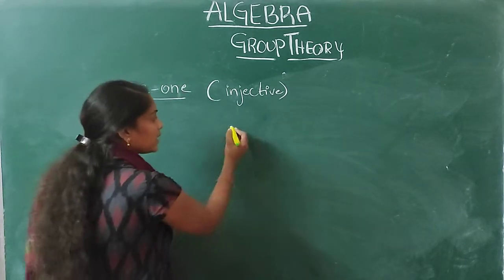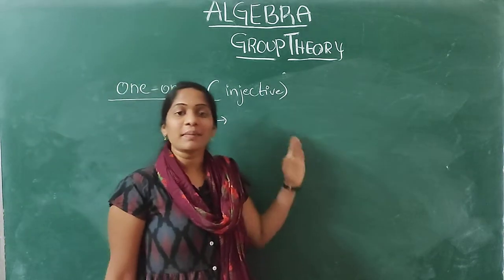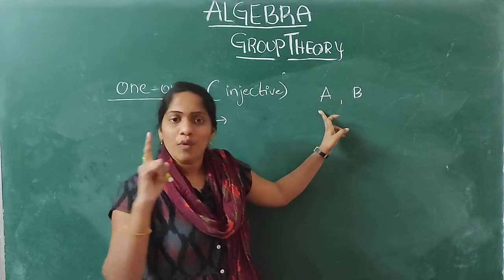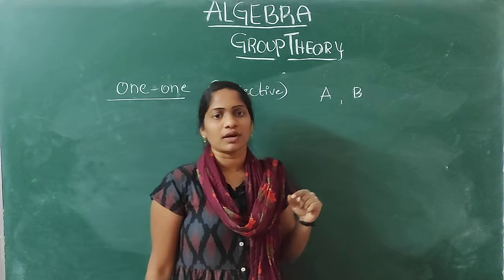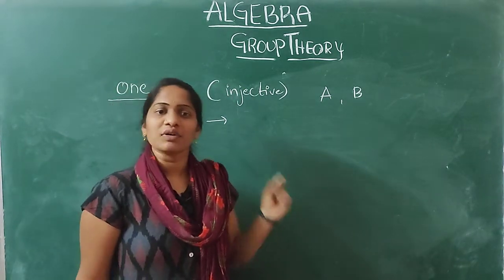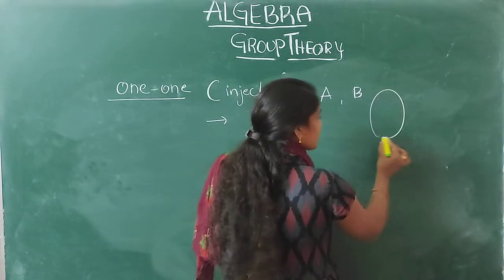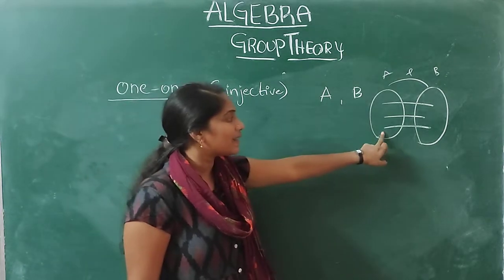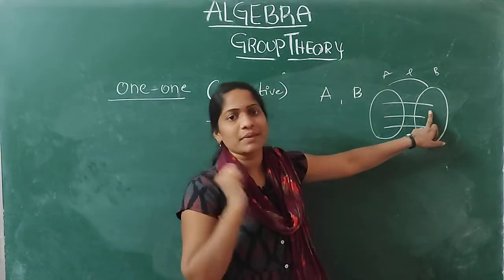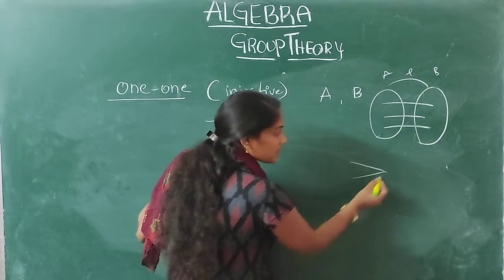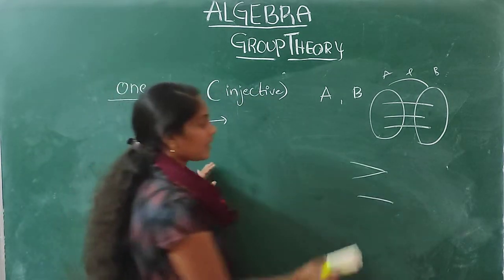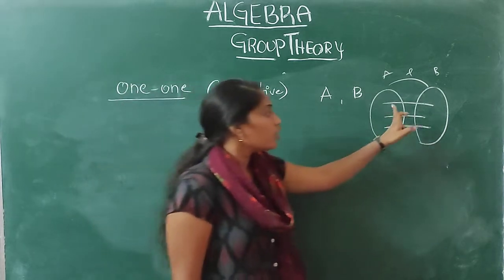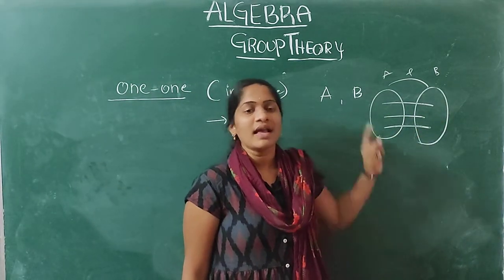For a one-one function, where A and B are two non-empty sets: every element of A has one and only one image in B. This is the same as the unique association condition in a function, but more strictly — just as in function diagrams where unique mapping is required, in one-one, every element in A should have only one image, not two.